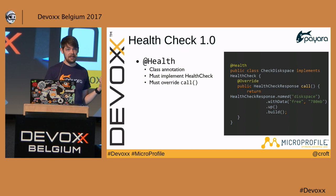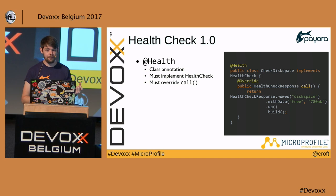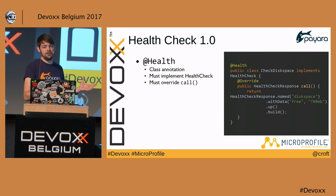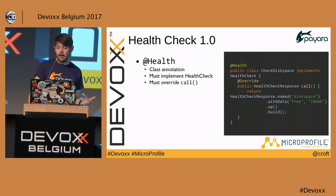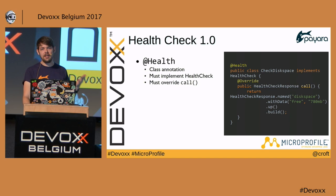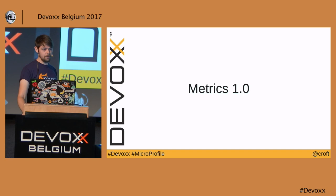Here's an example: annotate a class with @Health and implement the HealthCheck interface, overriding the call() method which returns a HealthCheckResponse. We've got HealthCheckResponse.named('disk space') that checks available disk space — and we're adding .withData() to tell you how much is free as a key-value pair, so your monitoring software can handle thresholds in a percentage-based way.